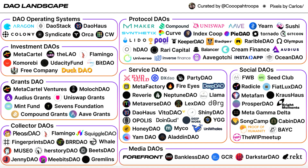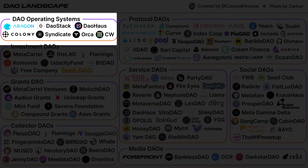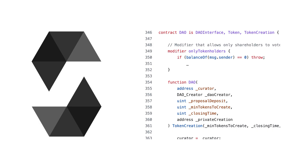If you want to create your own DAO, you can use DAO creation platforms like Aragon, Colony, Orca, Moloch, or DAOstack. Or you can code your own smart contract from scratch if you need more flexibility.